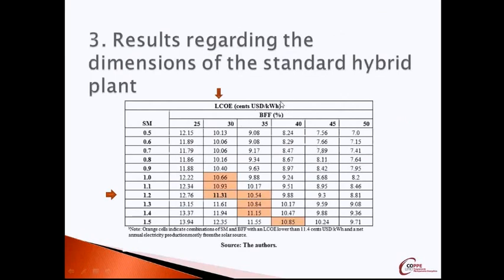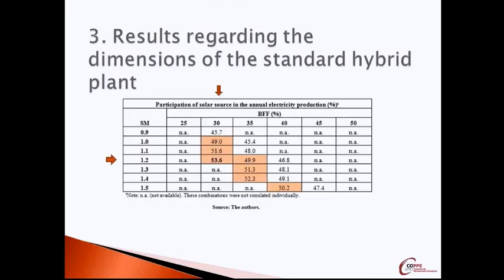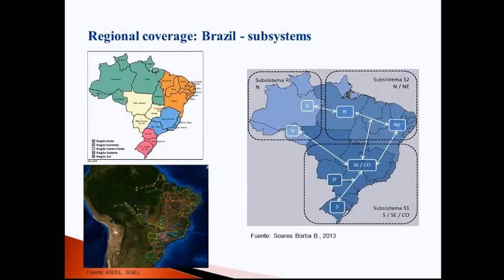In this table, we present some results. Using SAM, we concluded that the best configuration to fulfill the restrictions is a combination of solar multiple equal to 1.2 and a biomass field fraction equal to 30%. Using that combination of parameters, it is possible to produce electricity with a levelized cost of electricity of 11 cents per kilowatt-hour, with a share of annual electricity production from steam produced by the solar field equal to 53%. This means we calculated, in a preliminary way, a solar power plant and not a biomass power plant — this is a solar power plant that is supplemented with biomass.